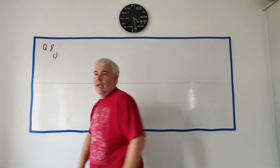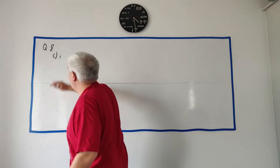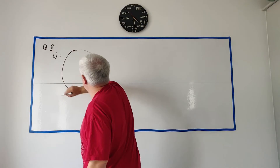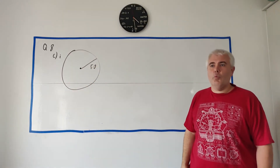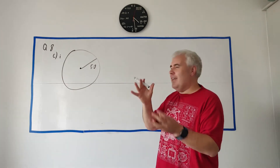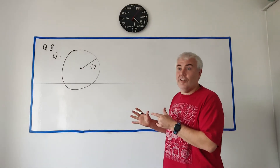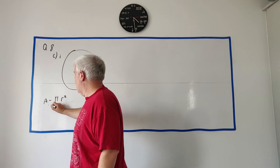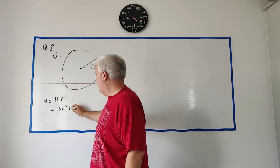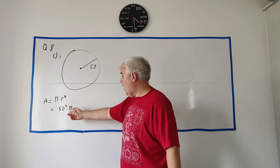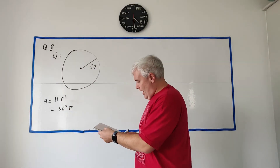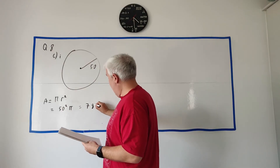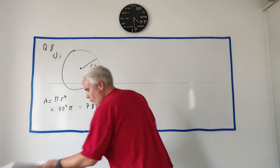For part c, the lighthouse is in the center of a circle of radius 50 kilometers. They ask us to find the area of this circle. Using A = πr², with r = 50: A = π × 50² = 2500π. Putting that into the calculator gives approximately 7854 km² to the nearest kilometer squared.